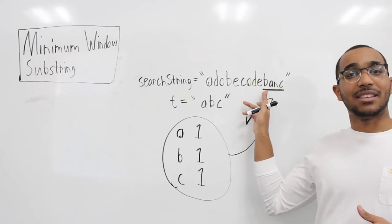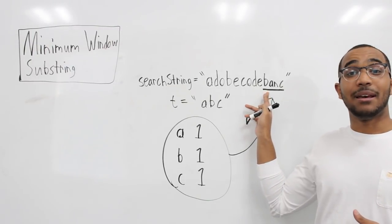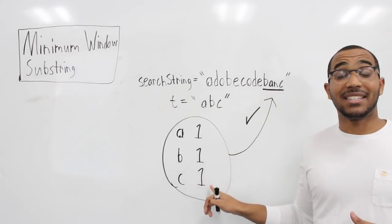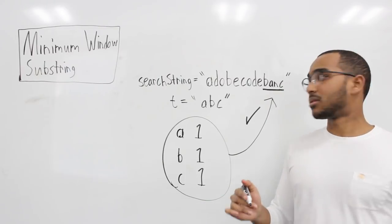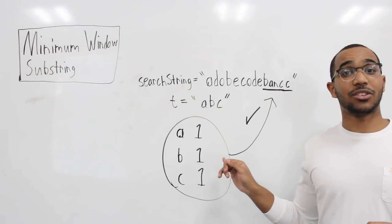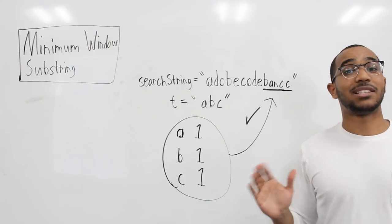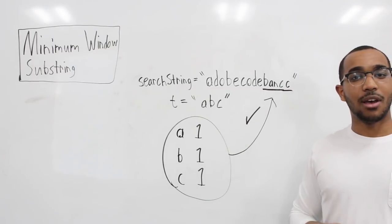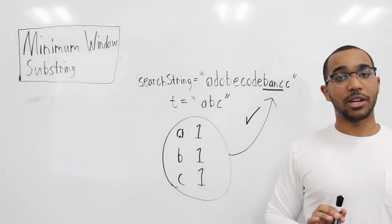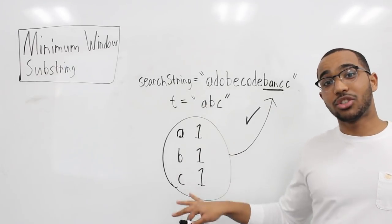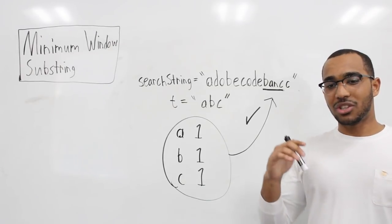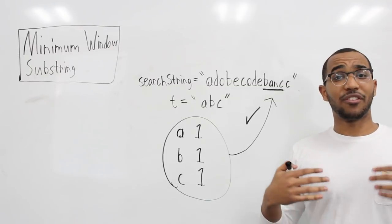The answer is this substring right here — B, A, and C — which satisfies one A, one B, and at least one C. You could include an extra C at the end, but that window still satisfies yet it's not the smallest. The smaller window also satisfies and is shorter, so we're looking for the smallest window that satisfies this character count mapping. Let's look at the brute force approach first, which is a sort of complete search and probably the first thing you'd think of.